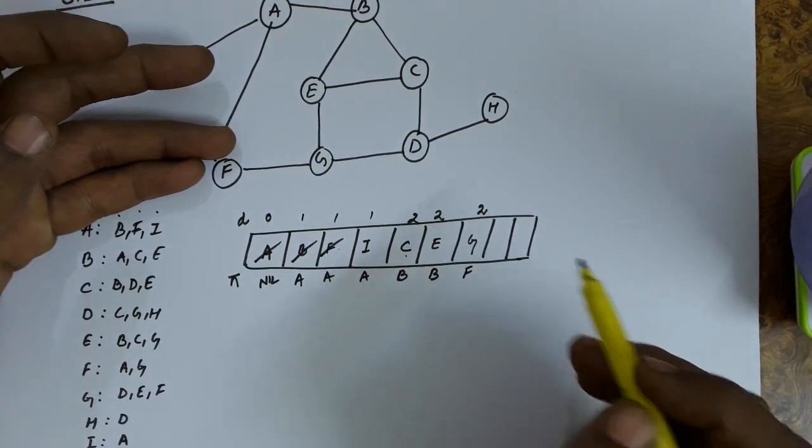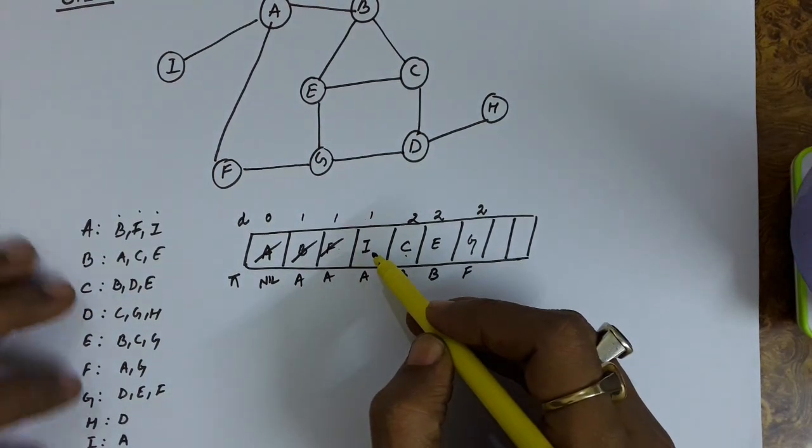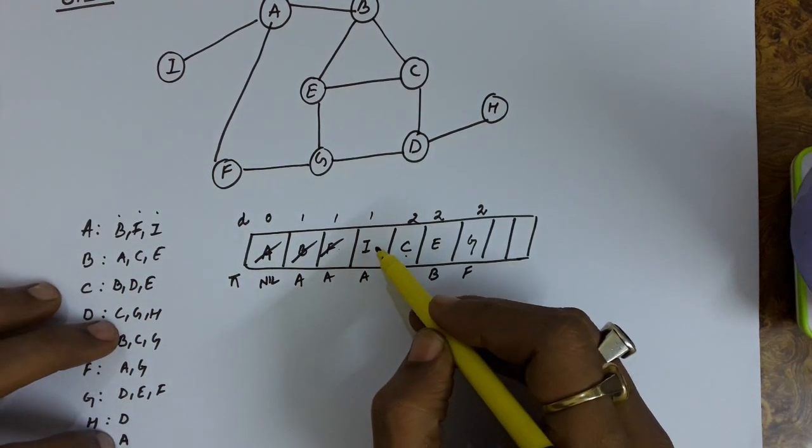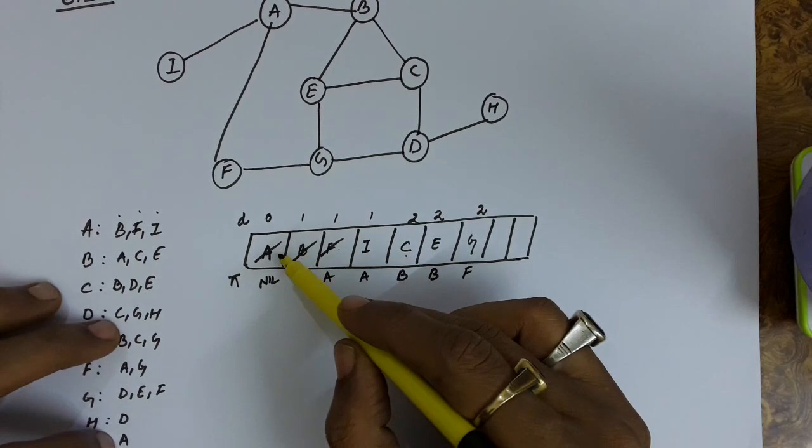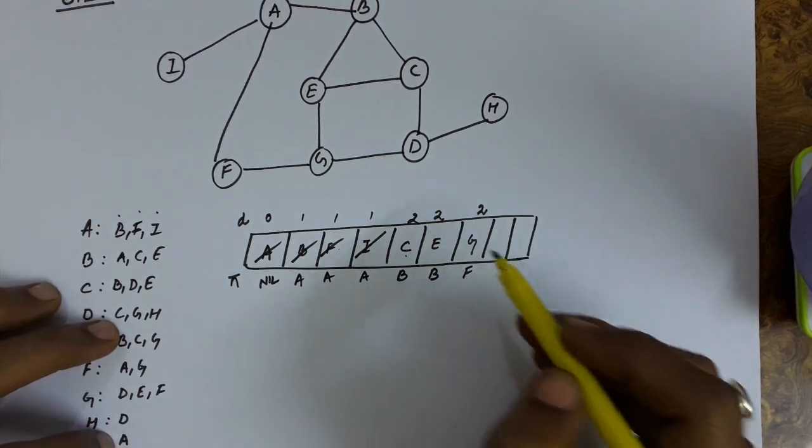Delete this F. And then pick I. The connections from I is only A which was already there in the queue sometime back. So just delete this I.